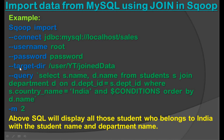You can change the sequence of these lines — for example, you can put --target-dir below the query, or you can put -m above --target-dir. When we execute this query, it will display all students who belong to India with their student name and department name, ordered by department name. In Scoop we can write join the same way as we write in MySQL.